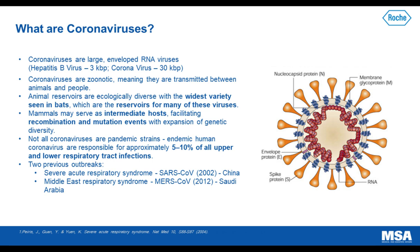Coronaviruses are the largest of all enveloped RNA viruses. Their genome is roughly 30,000 kilobases. They've got a large outer glycoprotein that is named the spike protein. When you view these viruses under an electron microscope, they have the appearance of a crown, thus the name Coronavirus.